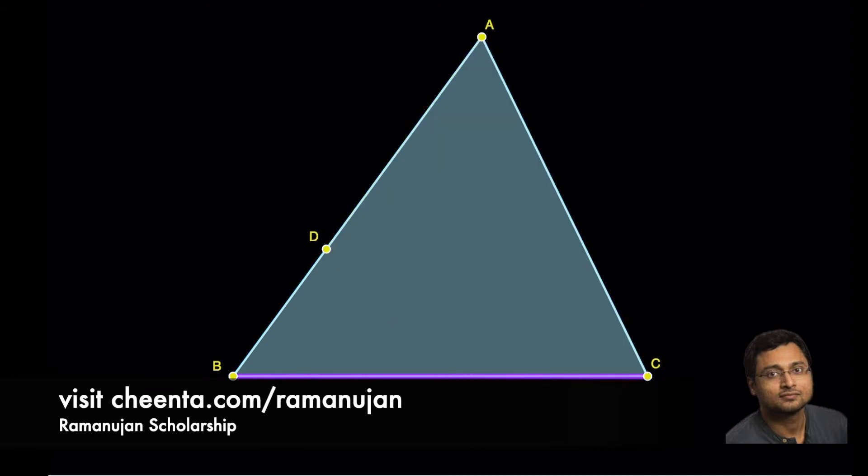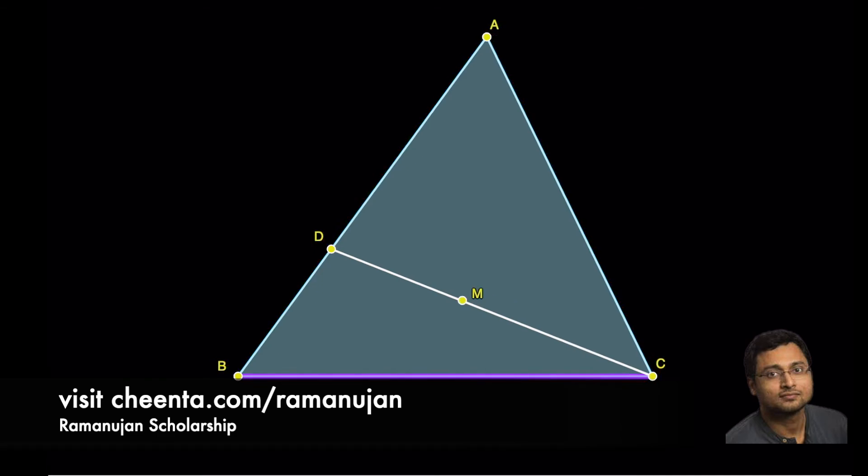So, to reverse engineer the position of X, let's join DC. And let's mark the midpoint M of DC. We will join AM and produce it to meet BC at a point. And that point we know from the back calculation is our desired point X.